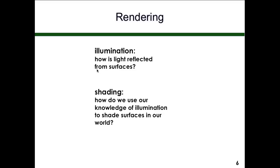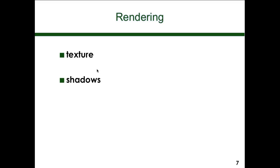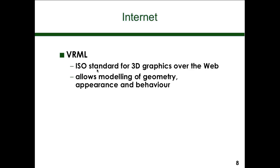In the concept of rendering, we're primarily interested in illumination — how is the light reflected from the surfaces? Then shading: how do we use the knowledge of illumination to shade surfaces in the world? We also have texture and shadows to consider. We create the objects, put them out in the world, then we do shading, lighting — all these are external components. On the internet, we have VRML, which is ISO standard, gives us 3D graphics compatible with the internet, works over HTTP protocol and an HTML browser. Last: the modeling of geometry, appearance, and behavior.